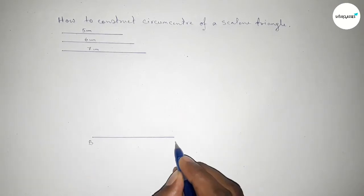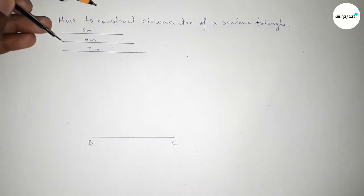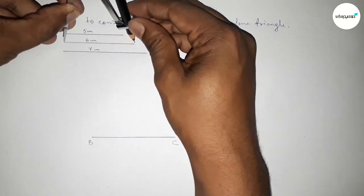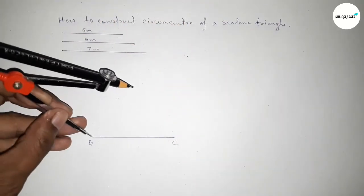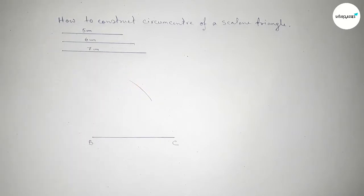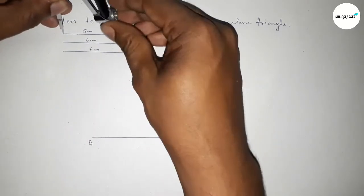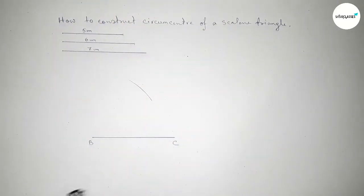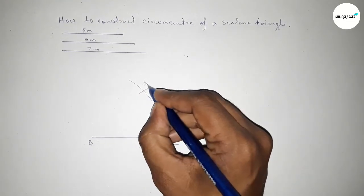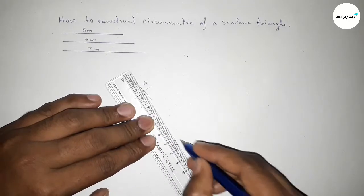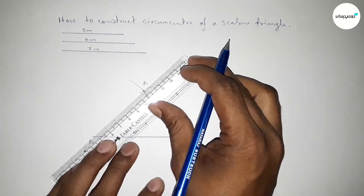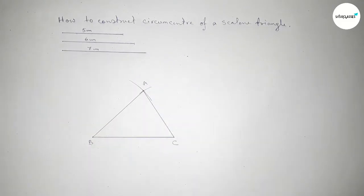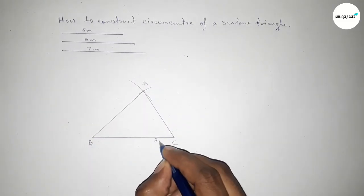Taking point B and point C at the ends of the seven centimeter line. Next, taking the length six centimeters by using the compass and putting it at C, drawing an arc. Now taking the length five centimeters and putting the compass at B, cutting the arc so both curves intersect at a point A. Now joining A to C and A to B to get the scalene triangle.